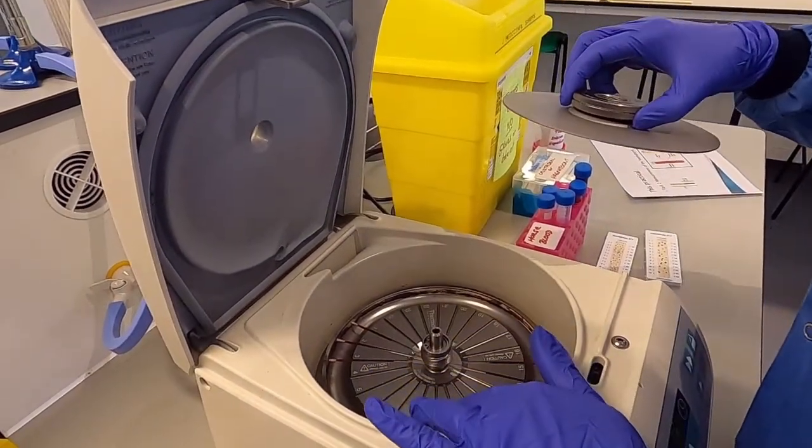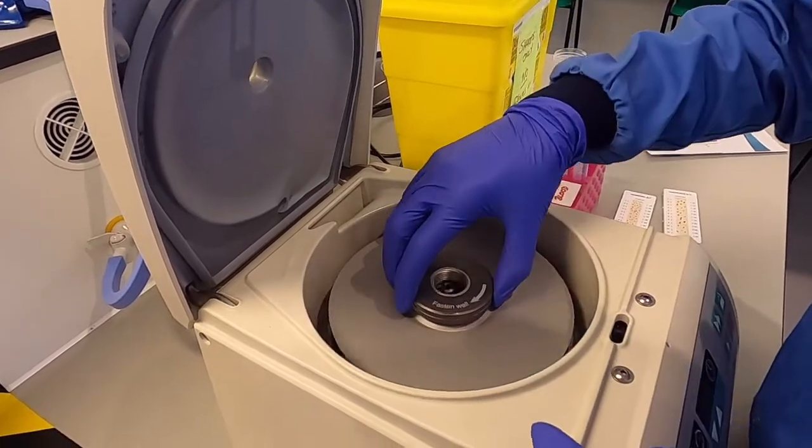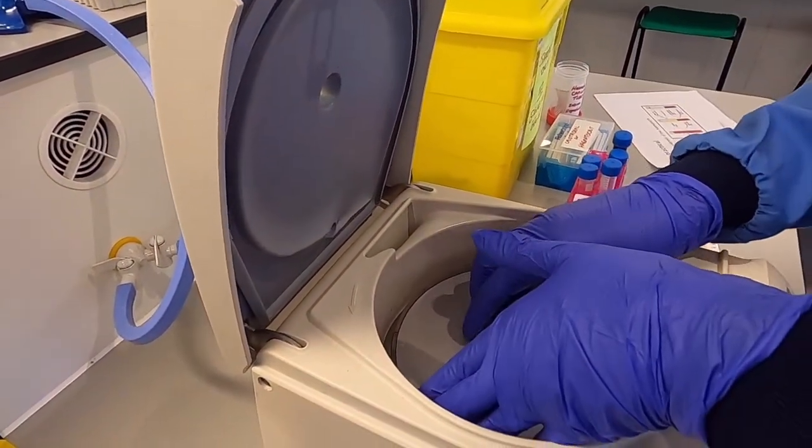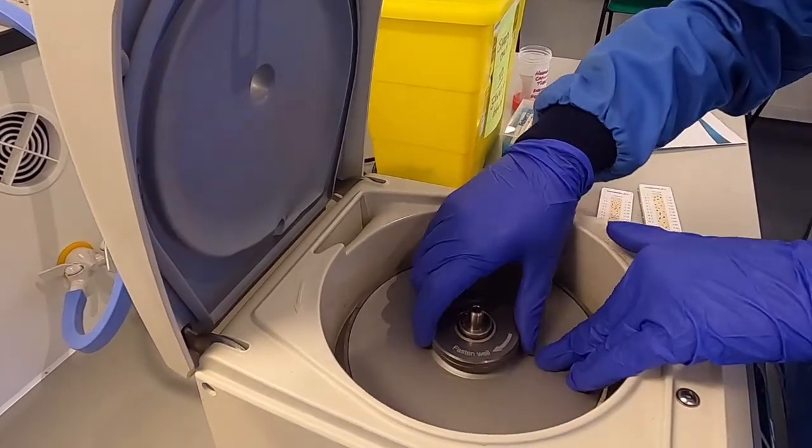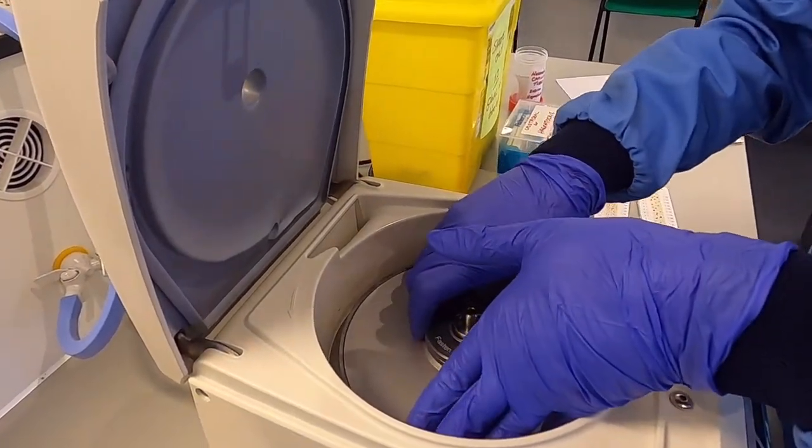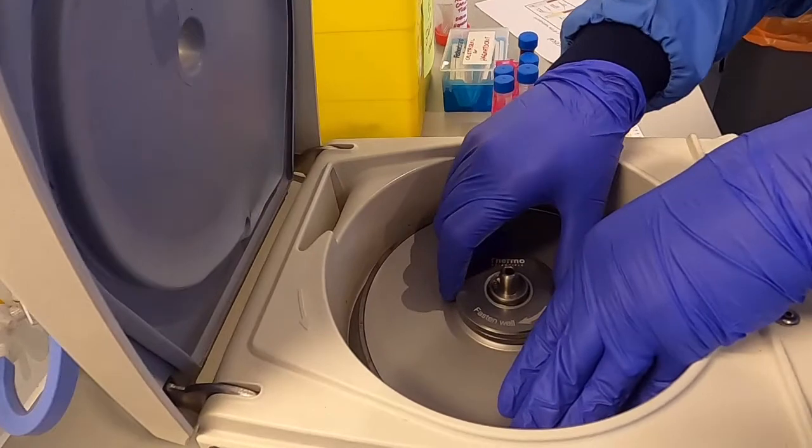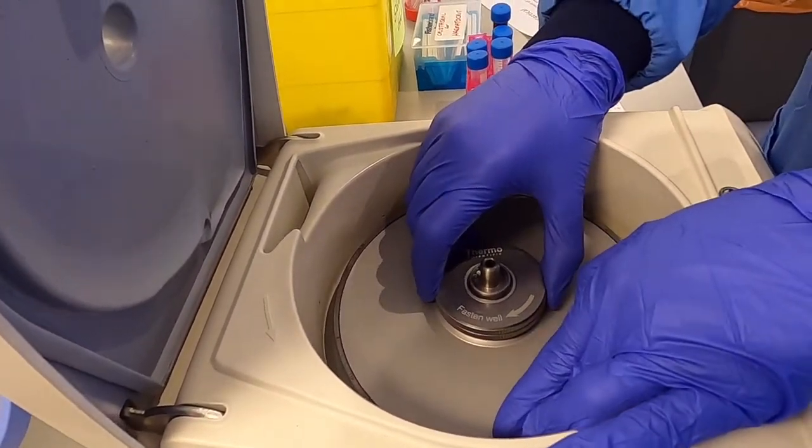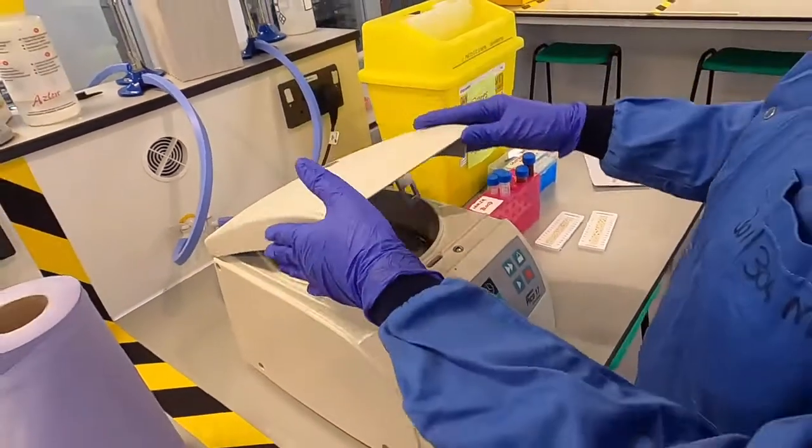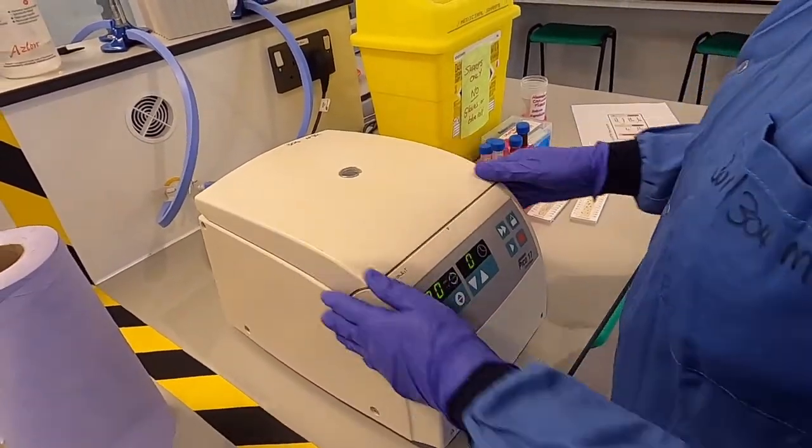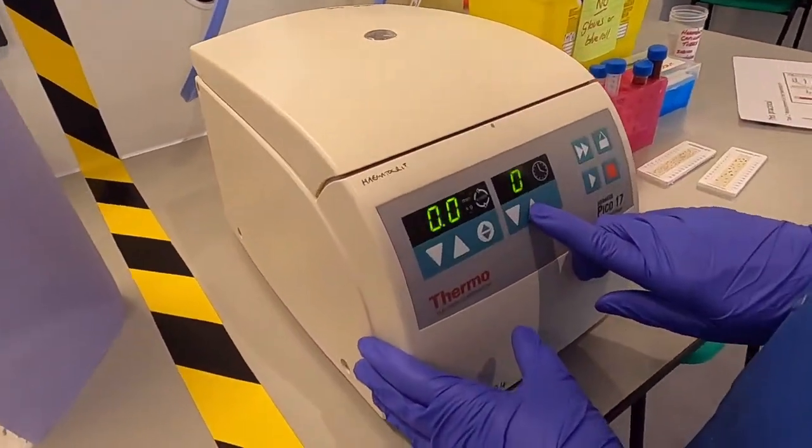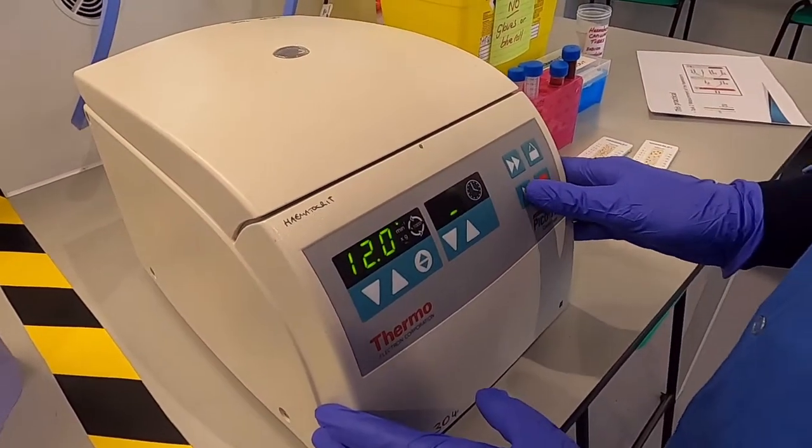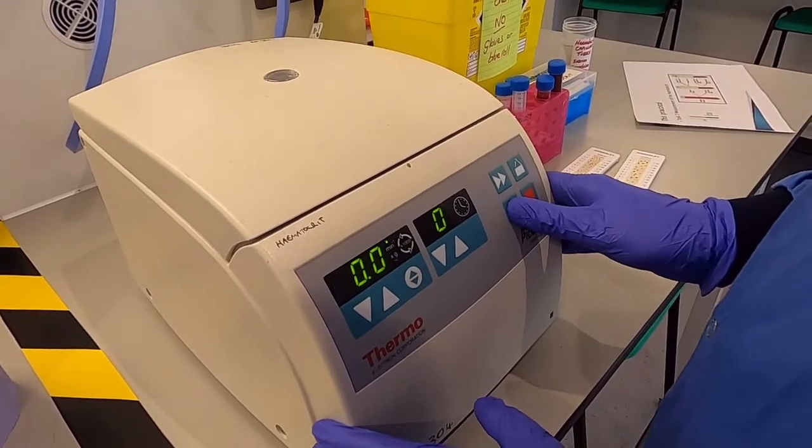So once the centrifuge is balanced with our capillary tubes we can then add the lid and we need to make sure that that is tightened, and again that's to make sure that no damage occurs during the centrifuge run. So we've tightened that nice and tight and put the lid down. We're going to spin these for two minutes at 12,000 rpm so I'm just going to set this centrifuge running.